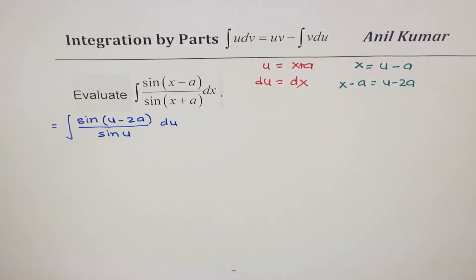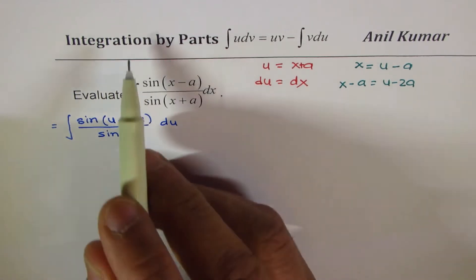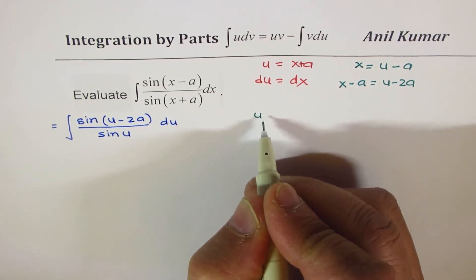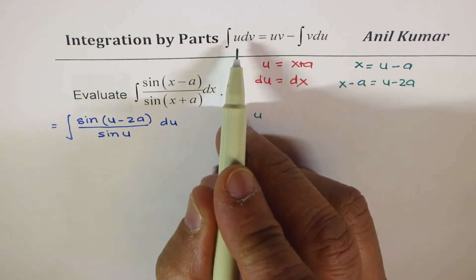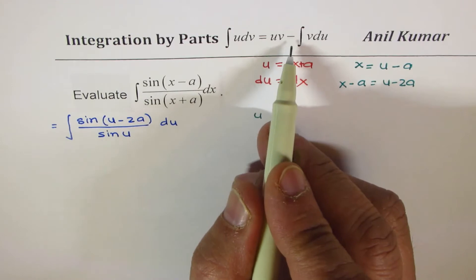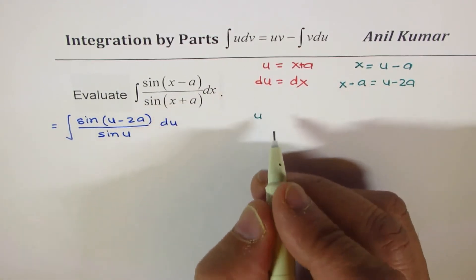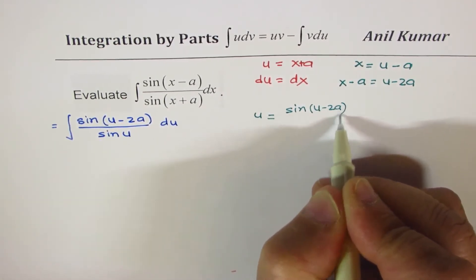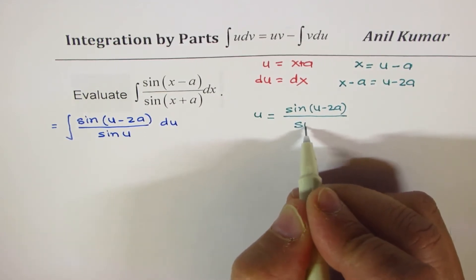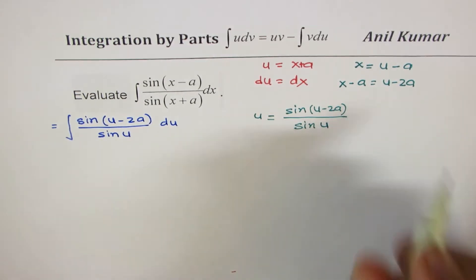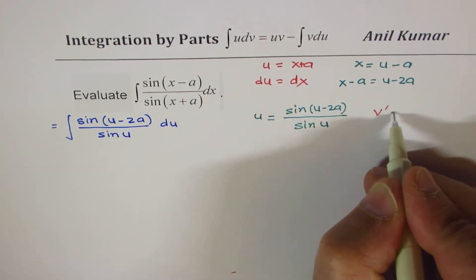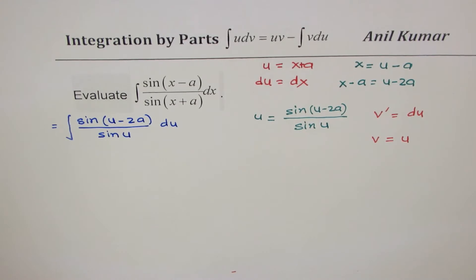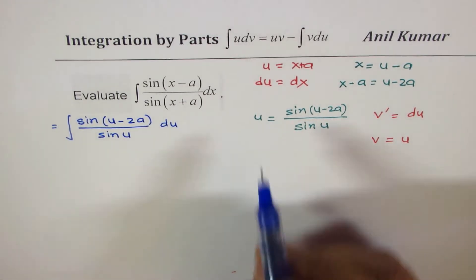Now we are going to solve it using integration by parts. So let us define our u and v. I'm using the same terms u—I know it might create confusion—but we'll use this formula: integral of u dv equals uv minus integral of v du. We'll take u as sin(u-2a) over sin(u), since it is easy to differentiate relatively, and we'll take v' as 1.